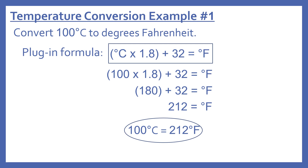The first example: convert 100 degrees Celsius to degrees Fahrenheit. Using the plug-in formula, we take degrees Celsius times 1.8, in parentheses, plus 32 to get degrees Fahrenheit. So we have 100 times 1.8 — we do that part in parentheses first — which equals 180, then plus 32.